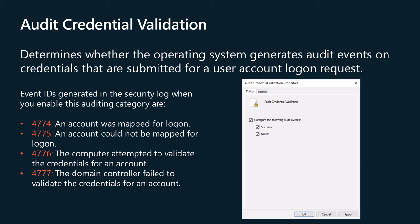Microsoft recommends configuring failure auditing to collect information about failed authentication attempts using domain accounts and the NTLM authentication protocol. Event IDs generated in the security log when you enable this auditing category are: 4774 - an account was mapped for logon; 4775 - an account could not be mapped for logon; 4776 - the computer attempted to validate the credentials for an account; 4777 - the domain controller failed to validate the credentials for an account.